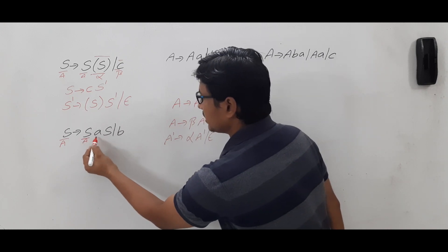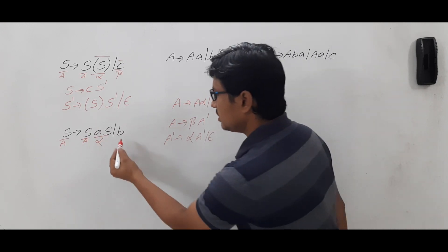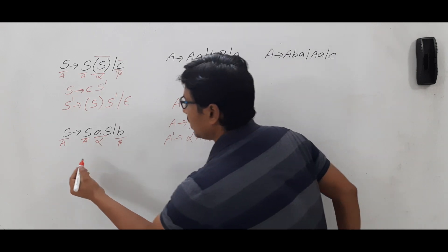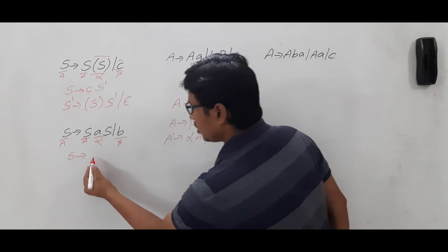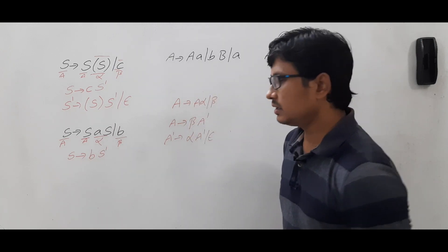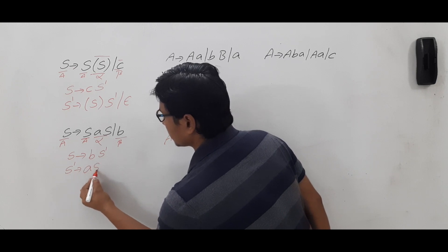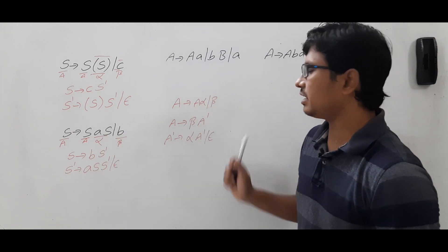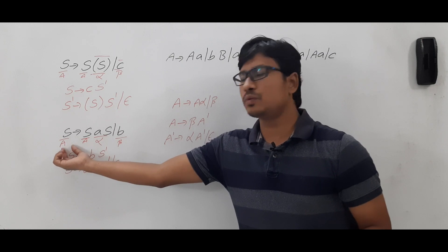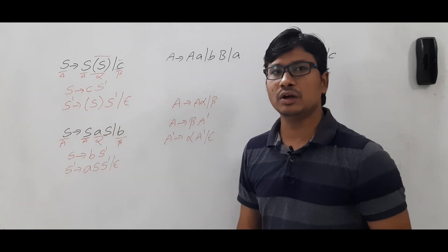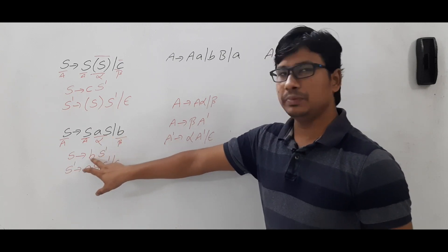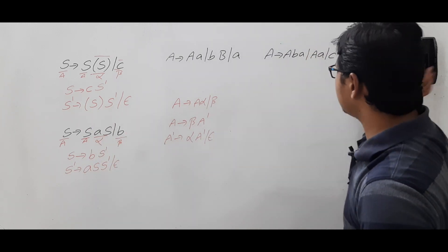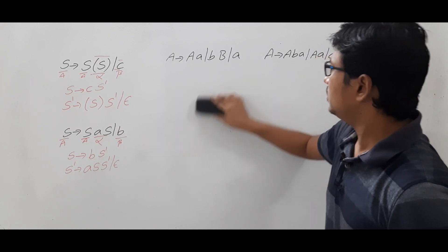As there is a left recursion, we will convert it into a right recursion. What is this one? This entire part 'aS' I will consider as alpha, and 'b' is the beta. If I convert into equivalent right recursion grammar, I get S → bS′, and S′ → aSS′ | ε. You can write this formula and identify what is A, what is alpha, and what is beta to easily solve.